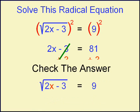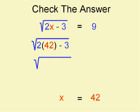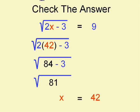Remember the last step — check the answer. Don't do it just because I said so; do it because sometimes these aren't going to work. Let's put 42 in instead of x. The order of operations tells you to do multiplication first: 2 times 42 is 84, minus 3 gives 81. The square root of 81 is in fact the right side of the equation. As soon as the left side equals the right side, the answer checks. So that one worked out.